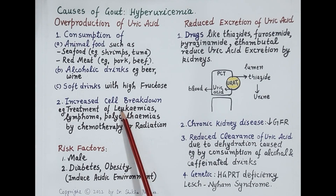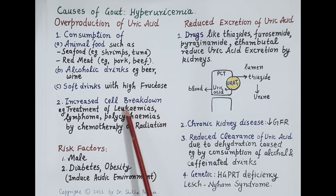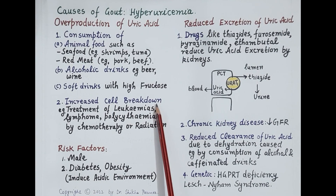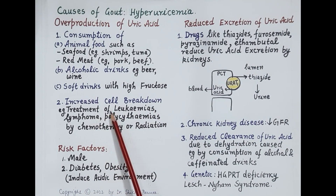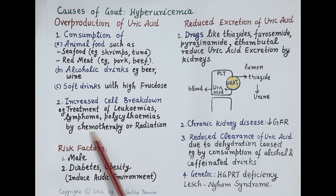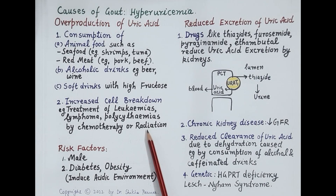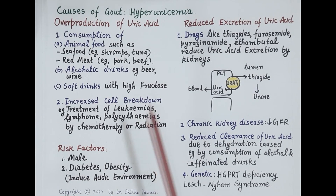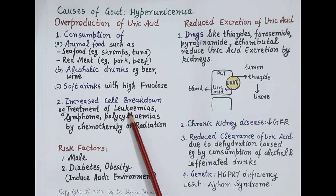The second important reason for overproduction of uric acid is increased cell breakdown. When more cells break down, more DNA and RNA breaks, leading to more breakdown of purine nucleotides and therefore more uric acid synthesis. During treatment of cancers like leukemia, lymphoma, and polycythemia by chemotherapy or radiation therapy, there is massive breakdown of cells in a short period of time, causing increased production of uric acid. So the two main reasons for overproduction are purine-rich diet and excessive cell breakdown.